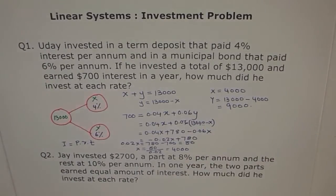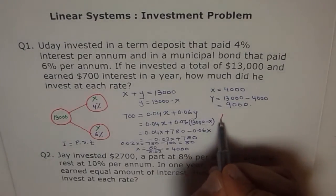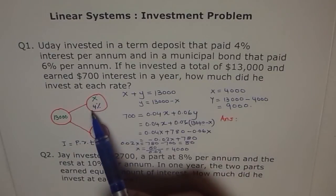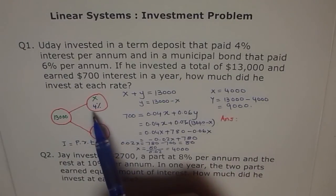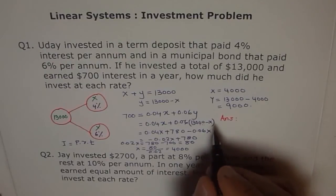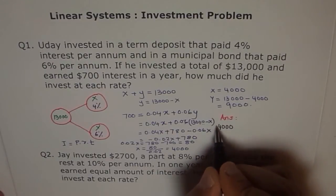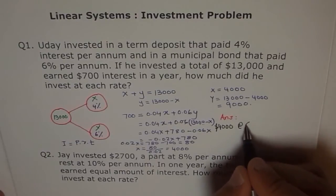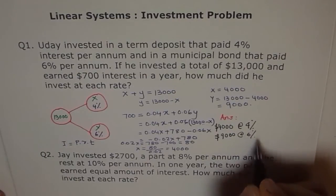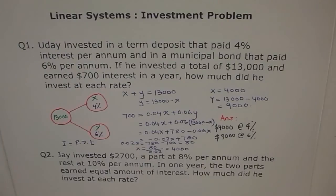Now, it's time to write our answer. Answer is, you write the whole statement. I'm not giving the whole statement, but I'm telling you the answer. Uday invested at 4%. 4,000 at the rate of 4%, dollars at the rate of 4%. And $9,000 at the rate of 6% for one year to get or to earn interest of $700 that year.